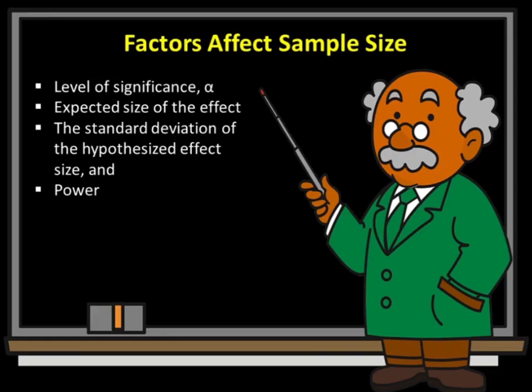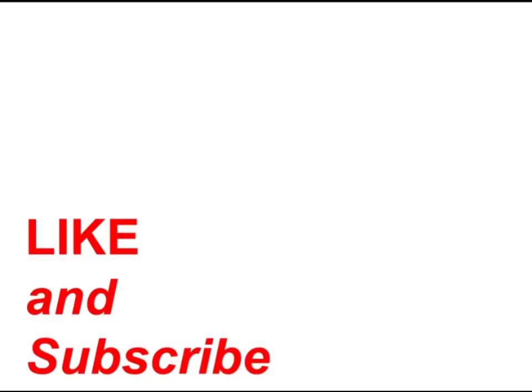There are four factors that affect the sample size, which are level of significance alpha, expected size of the effect, the standard deviation of the hypothesized effect size, and power. Thanks for watching. Remember to subscribe to my channel. Bye, see you next time.